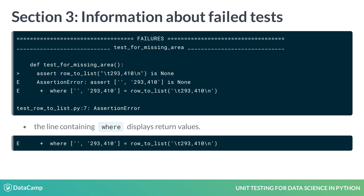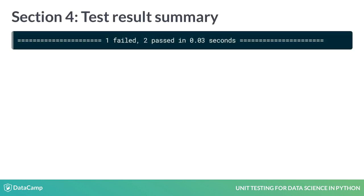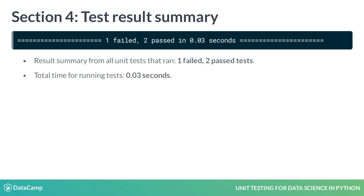We would have to figure out why rowToList returns a list instead of None in this case. The final line is a test result summary, saying that one test failed and two passed. Additionally, we also find out that the test took 0.03 seconds to run — that's really fast compared to the time we would need to test using the interpreter.